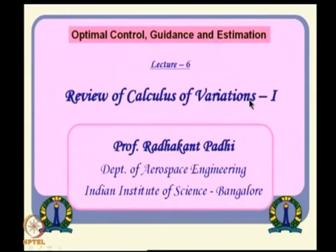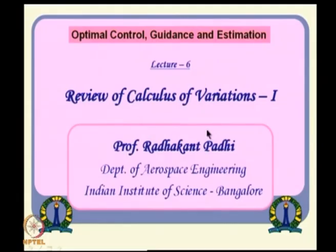Why do we do that? Because one very strong backbone of optimal control theory relies on this calculus of variation approach. In fact, the entire problem can be viewed as nothing but a calculus of variation problem. Typically, calculus of variation is a vast subject in its own right, but we will just see the concepts that are relevant and then proceed further for optimal control ideas.